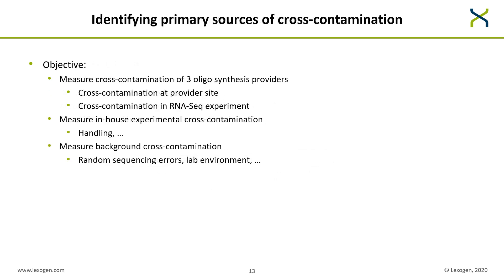With our dual index experiments we also wanted to look at primary sources of cross-contamination, measuring three different types. First, cross-contamination related to three different oligosynthesis providers, distinguishing between cross-contamination at the provider site and within an RNA-seq experiment. Second, in-house experimental cross-contamination, mainly the result of handling. And third, background cross-contamination resulting from random sequencing errors or the lab environment.